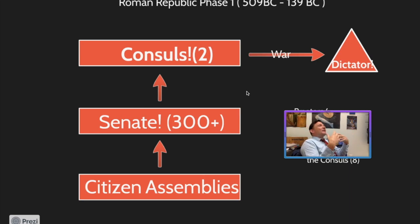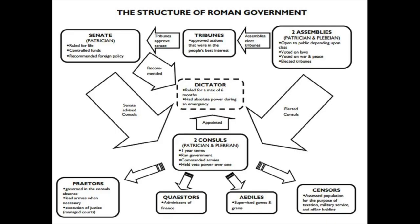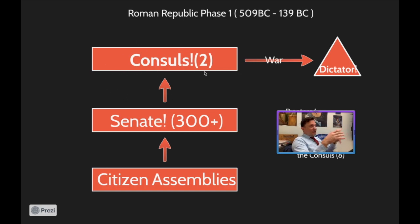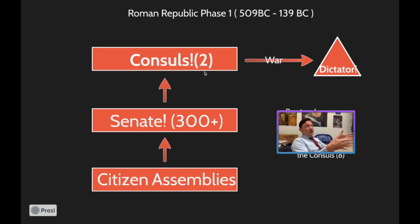This is what the Roman Republic looked like — a simplified diagrammatic view without even having a constitution. In phase one, there is a dictator who comes into power only during a time of war. Then there are the two consuls elected to rule over Rome. In the earliest phases of the Roman Republic, both had to be patricians. Consuls only serve for one year, then step down and usually return to the Senate. Two new ones are elected every single year, and you could run again but not for consecutive terms, because that smelled too much like kings to Romans.